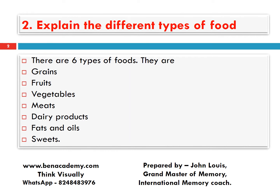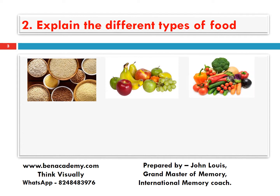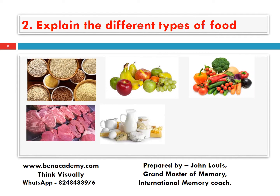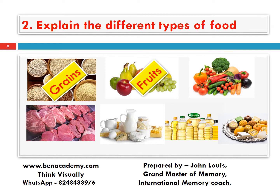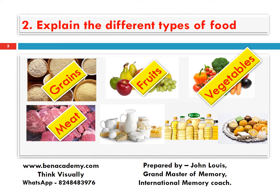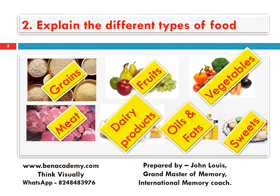Now let us see them in detail — grains, fruits, vegetables, meats, dairy products, oils and fats, and then sweets. So these are almost 7 types. The 6 main types are grains, fruits, vegetables, meats, dairy, oils and fats, and sweets is additionally included.